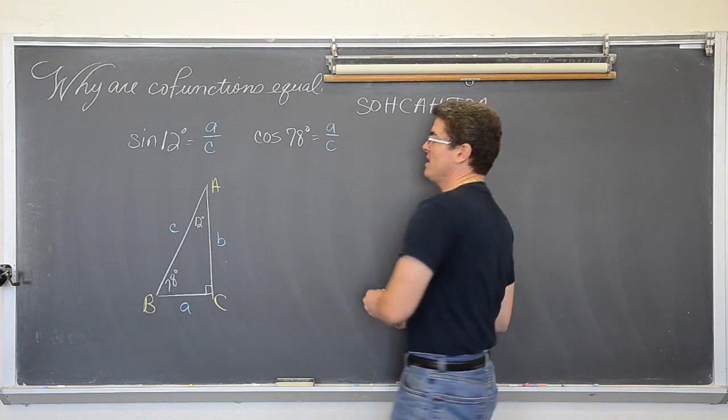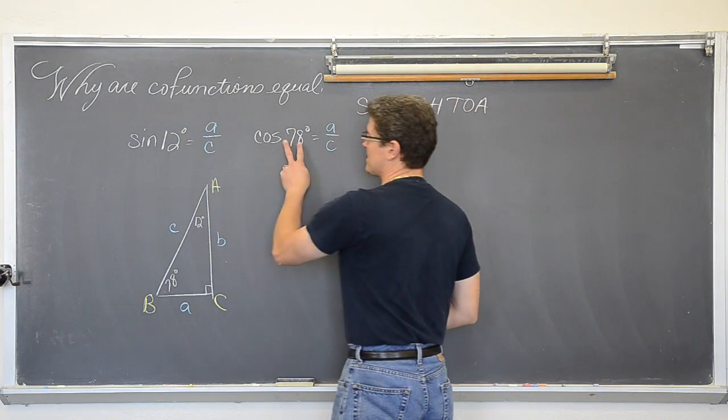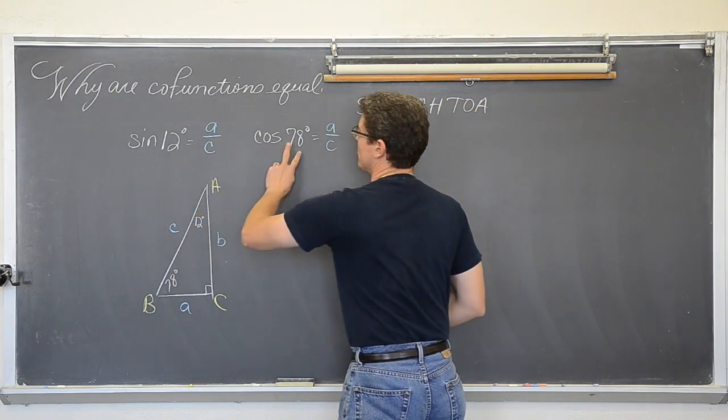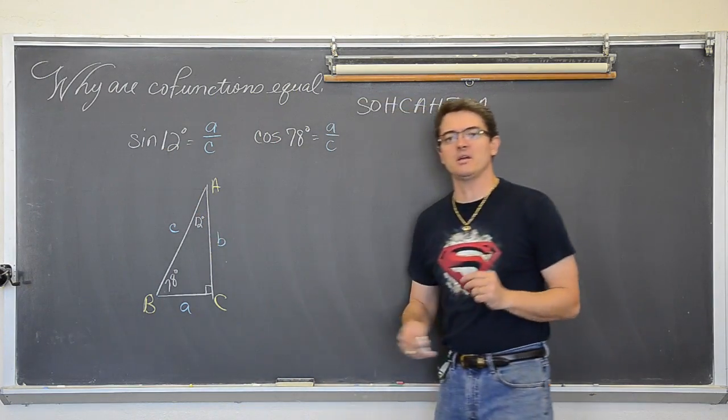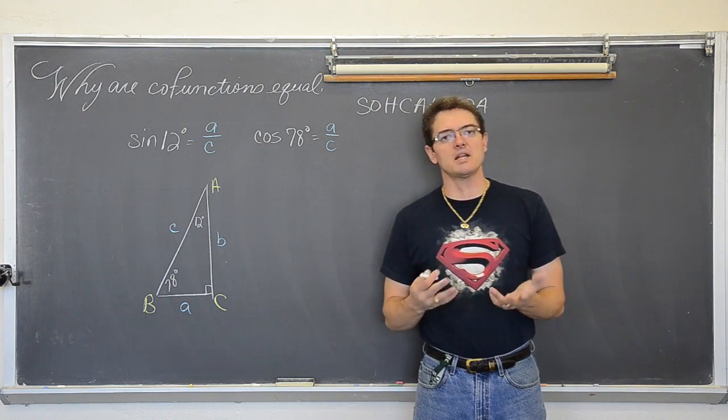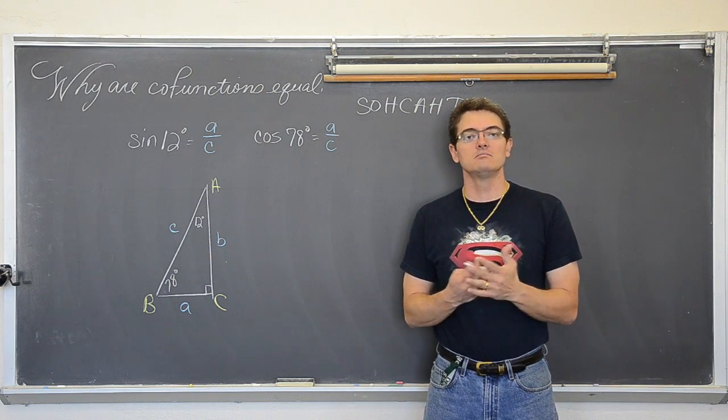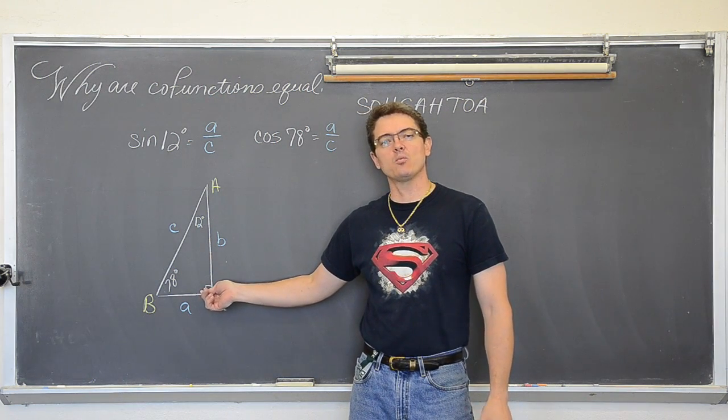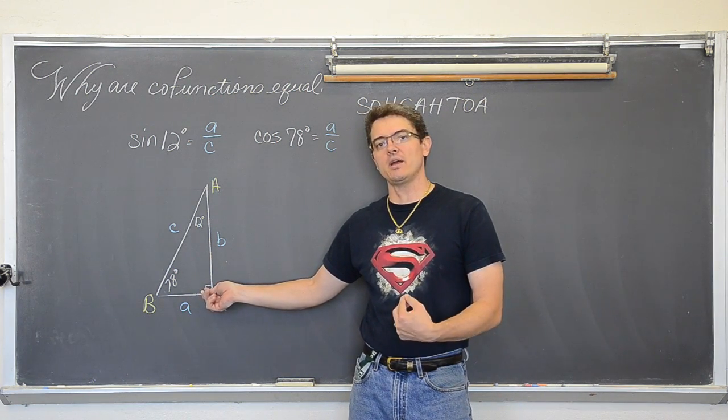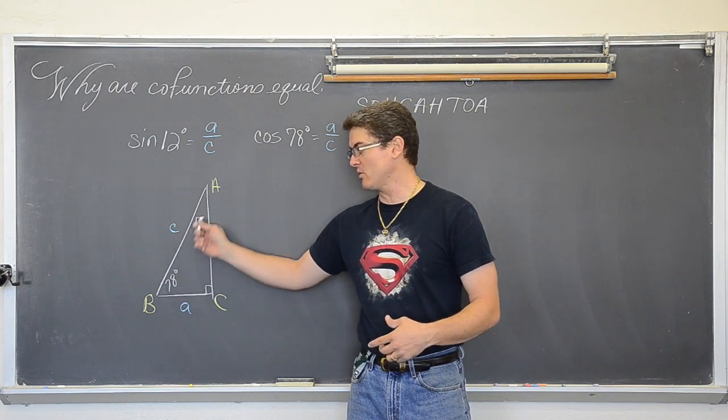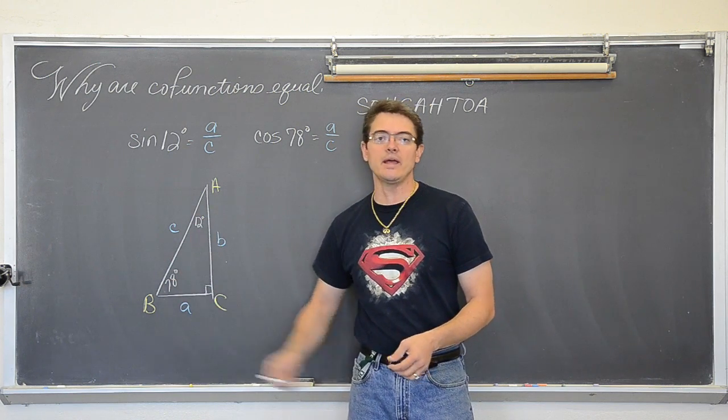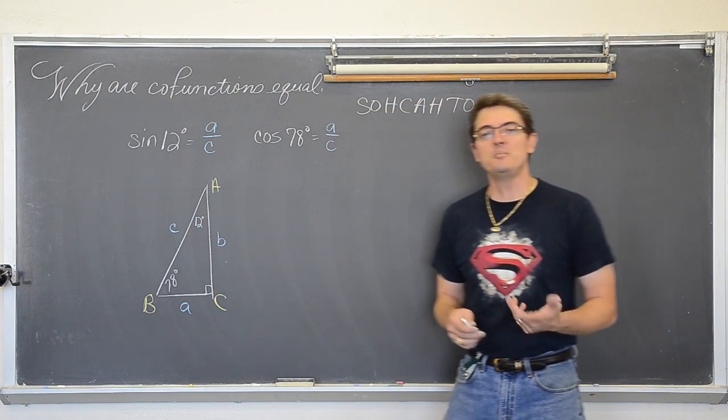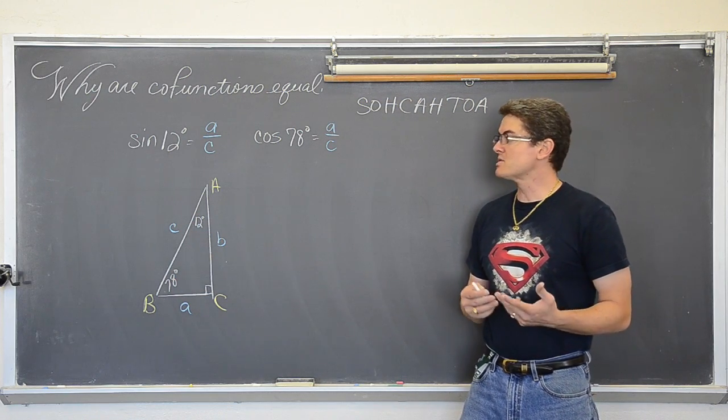So do you see what is happening there? From 12 it was opposite over hypotenuse, and from the 78 degrees A over C is the adjacent over hypotenuse. So the sine of 12 equals the cosine of 78. And it is no coincidence that 12 plus 78 is equal to 90. It is no coincidence that these two angles are complementary because how many degrees are inside of a right any triangle? 180. Well in a right triangle, 90 is taken up with the right angle inside that right triangle, and that only leaves you 90 degrees left for the other two acute angles to share. So those other two acute angles are always going to be complementary.